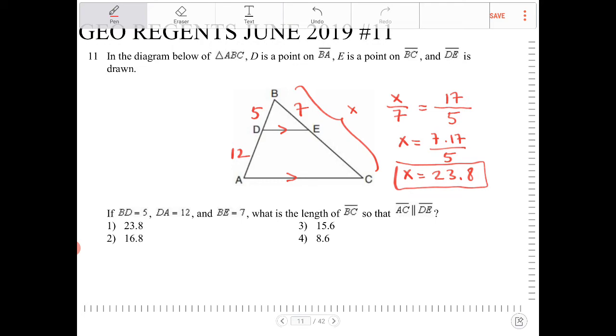So this question could have been framed in two different ways. It could have been framed by telling us that AC is parallel to DE to begin with, and then to solve for side length BC. Here the author of the question decided to go the other way around. So solve for side length BC so that DE will be parallel to AC.